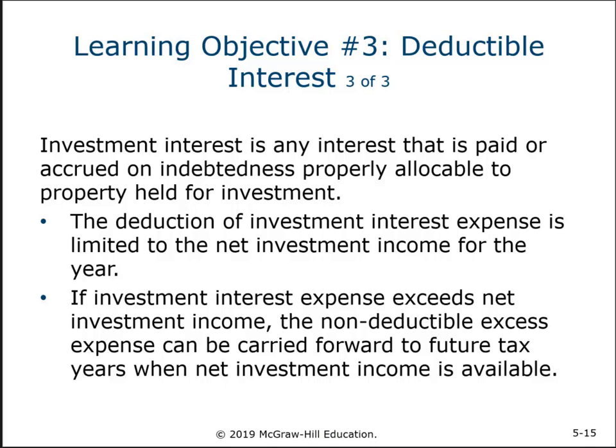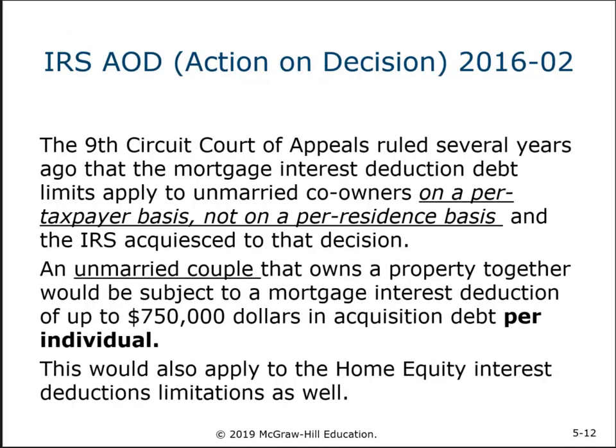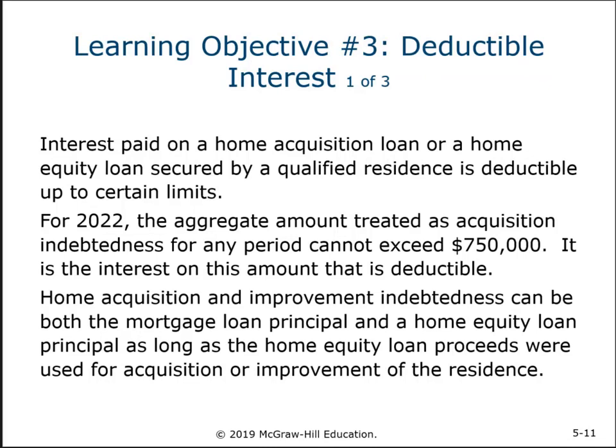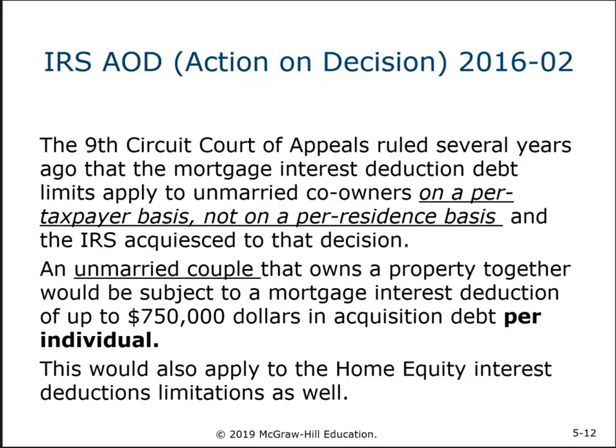Finally, mortgage interest deduction for your home is limited to two properties. You can have interest on your principal residence and one other residence, such as a vacation home or cabin. A third home does not qualify under the mortgage interest deduction.